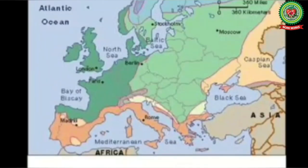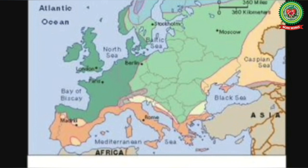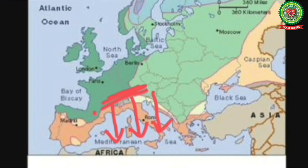The next wind is Mistral. Mistral is a cold and dry wind that starts from the Alps over France and blows towards the Mediterranean Sea. It is so cold that it decreases the temperature of the areas where it blows, especially the Rhone Valley of France, where the temperature decreases to the freezing point or below.